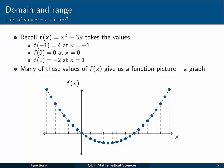So remember we've seen an example where f was x squared minus 3x, and we saw how this function took values of 4, 0, and minus 2 for x values of minus 1, 0, and 1.